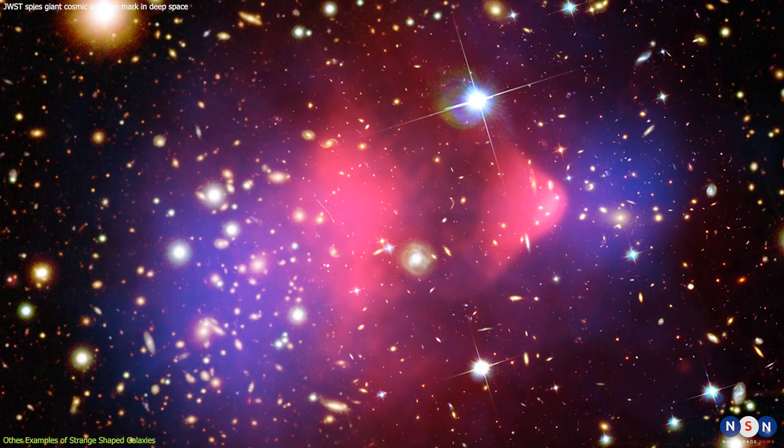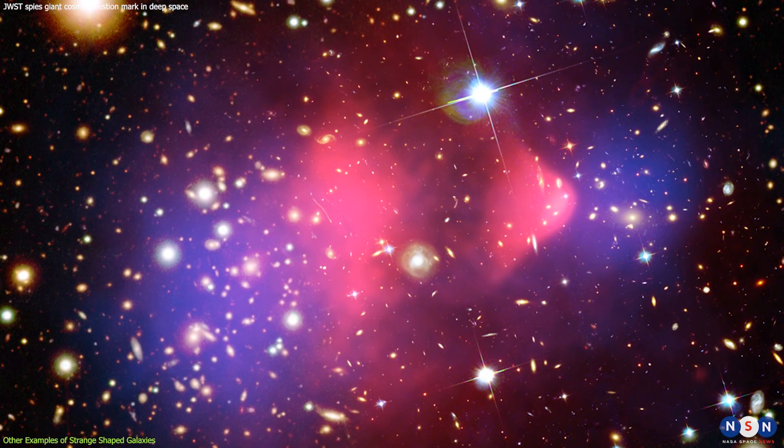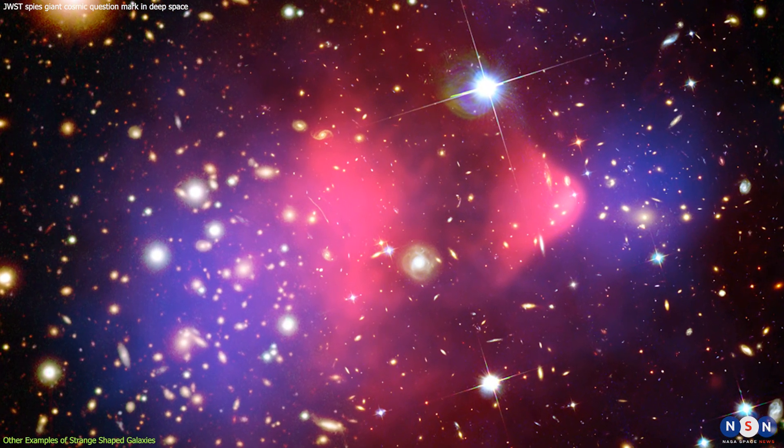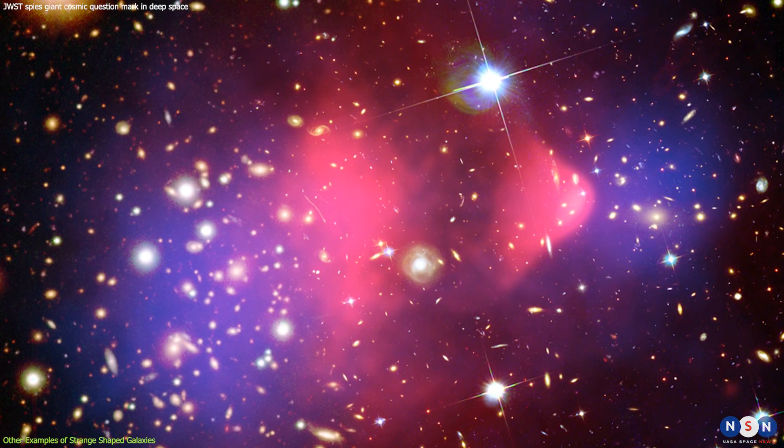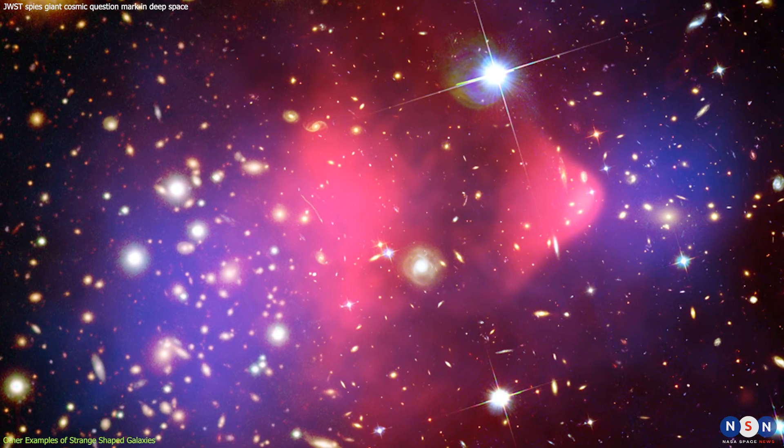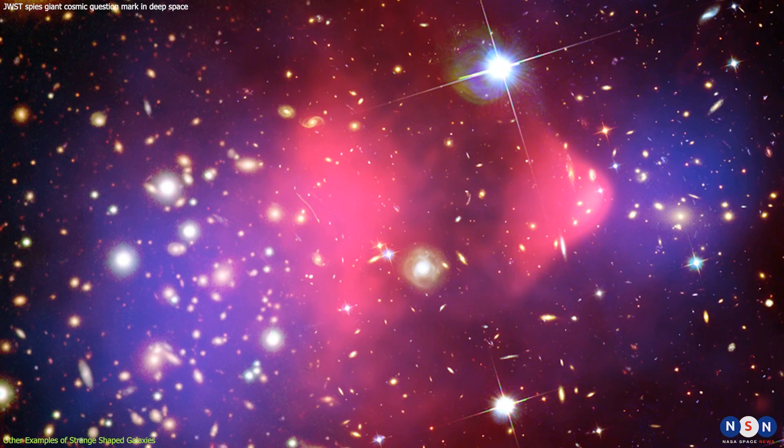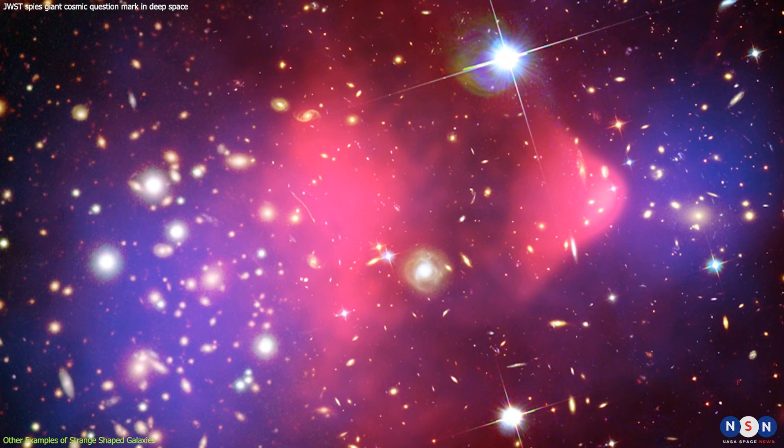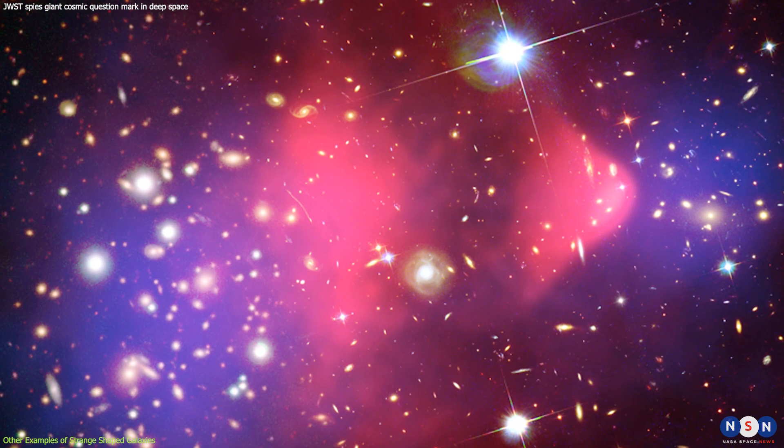The dark matter, however, passes through without interacting and keeps moving at high speed. The dark matter can be detected by its gravitational lensing effect on the light from background galaxies. The lensing effect shows that the dark matter is more massive and more extended than the normal matter.